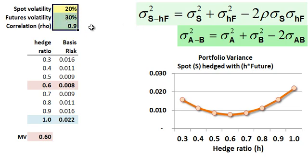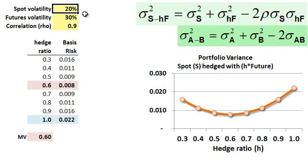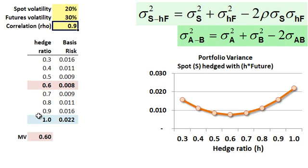With a few assumptions, thinking about an ounce of gold: the volatility of the spot price is 20%, the volatility of the futures price is a little more volatile at 30%, and they have a very high correlation of 0.9. Then for any given hedge ratio, I've used this formula to compute the basis risk. I'll put this spreadsheet on the website if you'd like to access it.